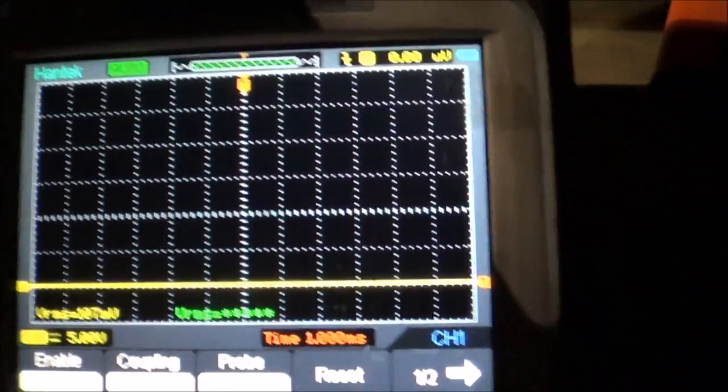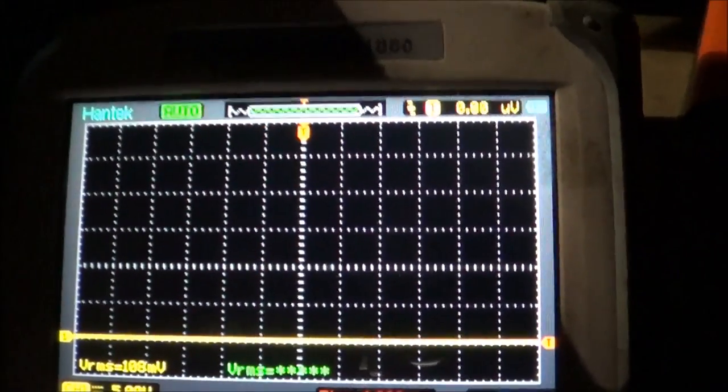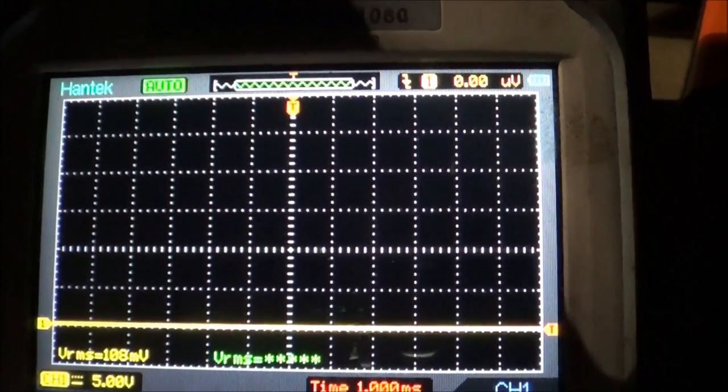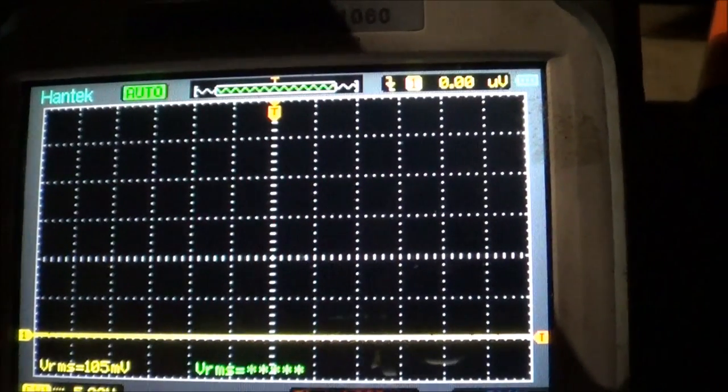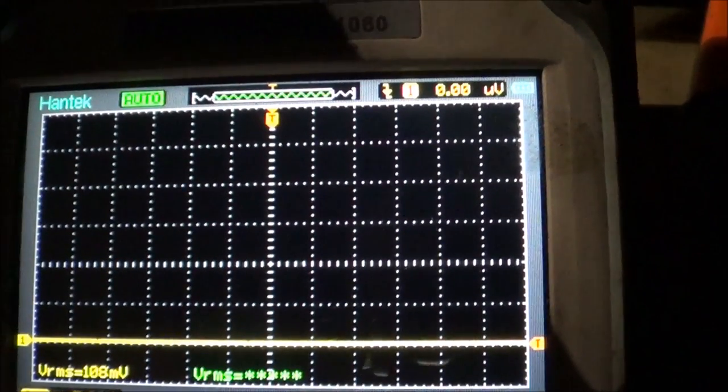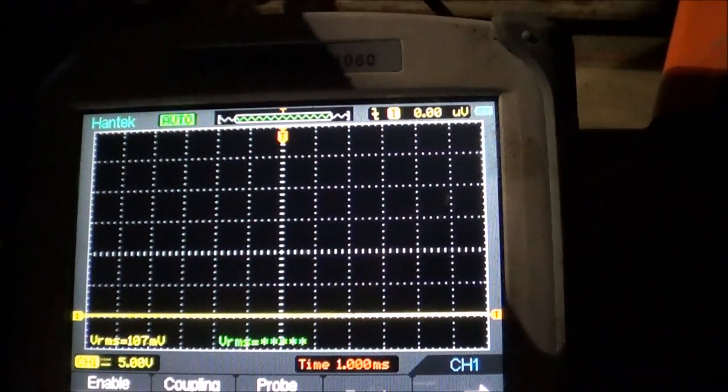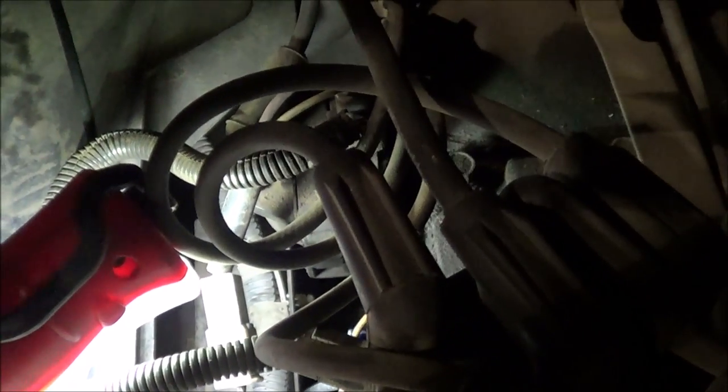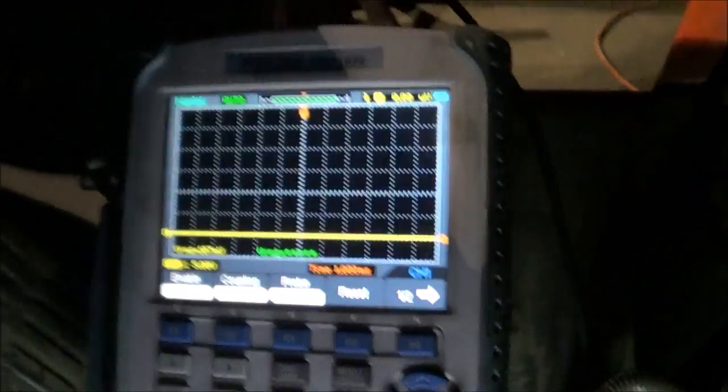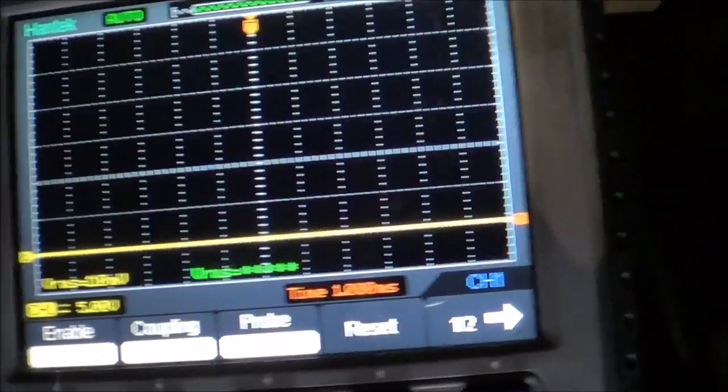We're going to see once it starts up what I'm expecting to see is that 5 volt signal be present on that wire. We're hooked up to the same pin still on the bypass signal wire. So now when it starts up we should see that 5 volt signal being present.